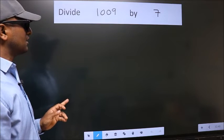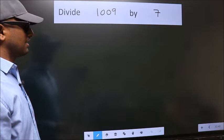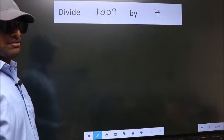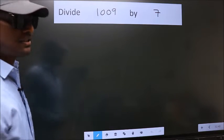Divide 1009 by 7. To do this division, we should frame it in this way.